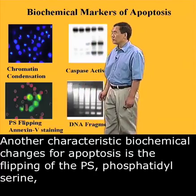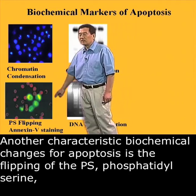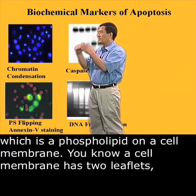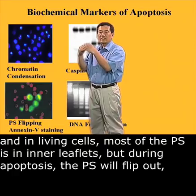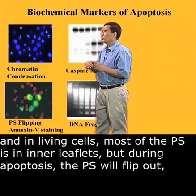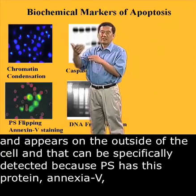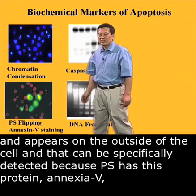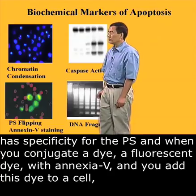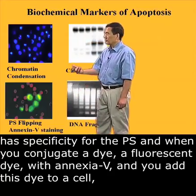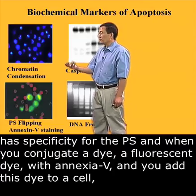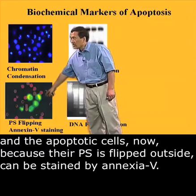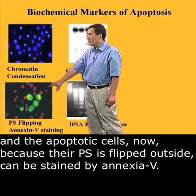Another characteristic biochemical change for apoptosis is the flipping of PS — phosphatidylserine — which is a phospholipid on the cell membrane. The cell membrane has two leaflets, and in living cells most of the PS is in the inner leaflet. But during apoptosis, the PS will flip out and appear on the outside of the cell. This can be specifically detected because annexin V has a specificity for PS. When you conjugate a fluorescence dye with annexin V and add it to cells, the apoptotic cells — because their PS is flipped outside — can be stained by annexin V.